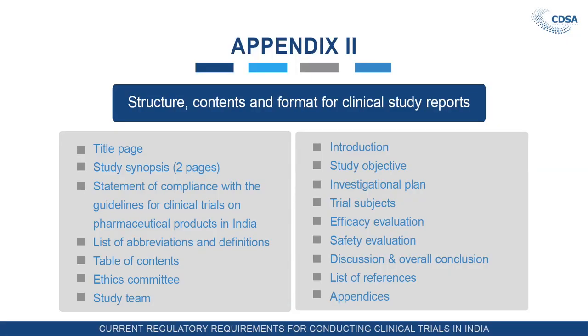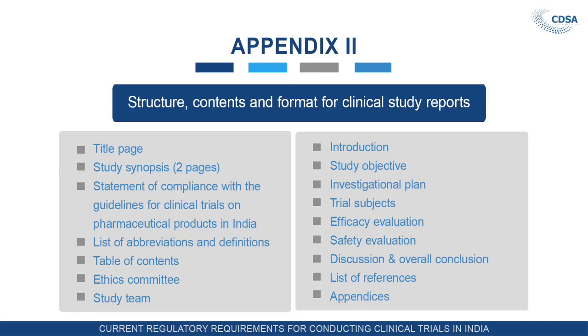According to appendix 2, the content should include: first, a title page, then a study synopsis of 1 to 2 pages briefing about all the studies, a statement of compliance with the guidelines for clinical trial on pharmaceutical products in India, then whatever abbreviations are used — for example BAB, BioLevity, BioQLN, CT for Clinical Trial — the meaning and definitions of those abbreviations, then a table of contents including any table related to statistical evaluation, and the ethics committee name and details of the committee which reviewed and accorded approval, and the study team — those involved in the conduct of the clinical trial.